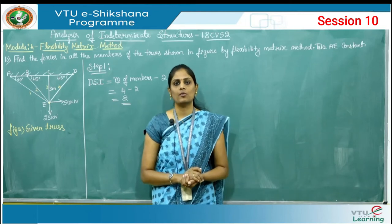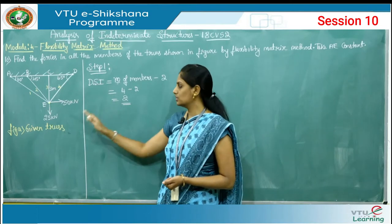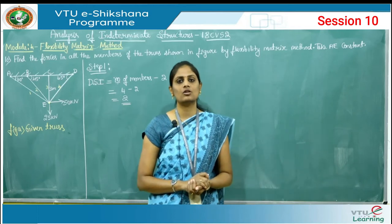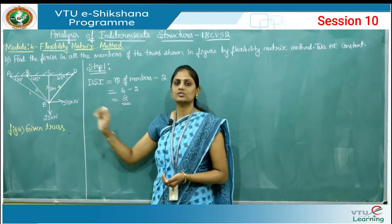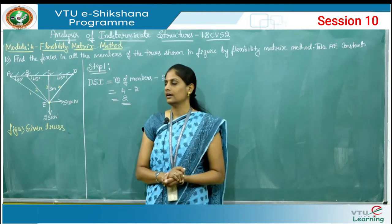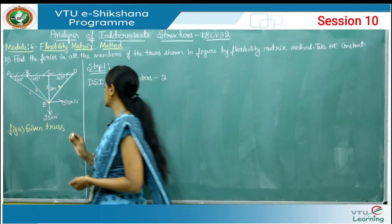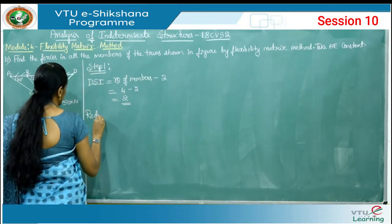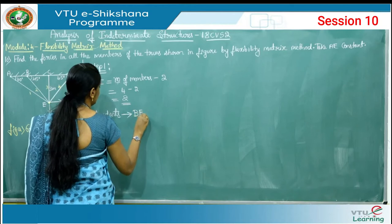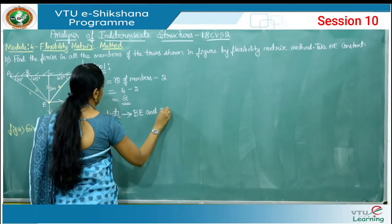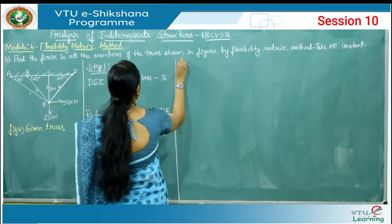In previous sessions, problems on trusses had a degree of static indeterminacy of 1. Here in this particular example, we are getting the degree of static indeterminacy as 2. Based on this number, we have to assume the redundants. I am going to take the diagonal members BE and DE as redundants. So assume redundants as BE and DE. This completes step number 1.